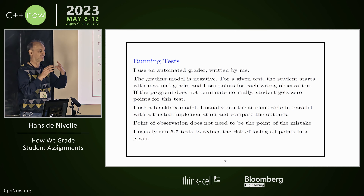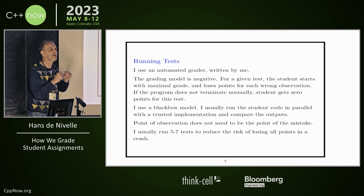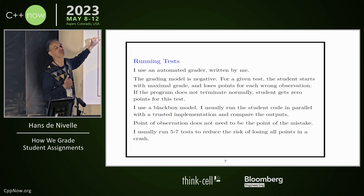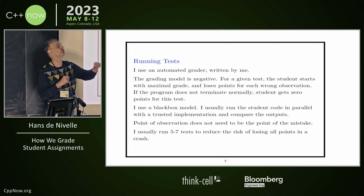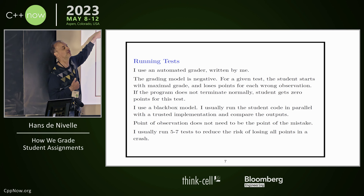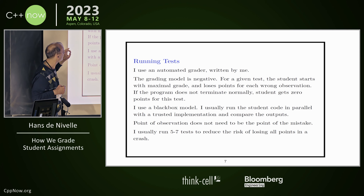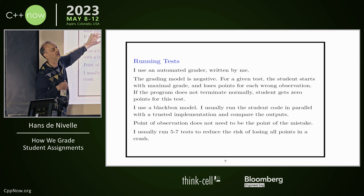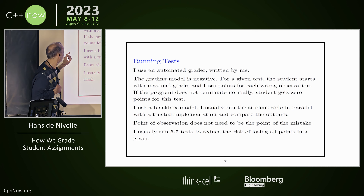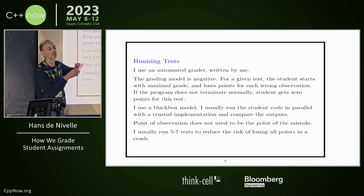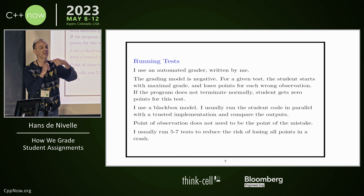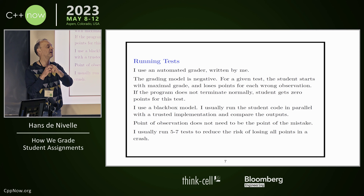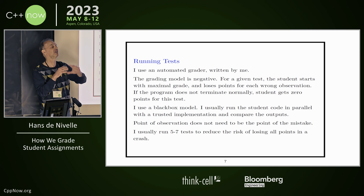The automated grader is written by me. Students start with a full grade, and on every failure they lose points. This is probably backwards — every success should give you points — but it doesn't work like this. You start with full points and lose them. If the program doesn't terminate normally, the student loses all the points. I use a black box model: you run a couple of tests. For example, if you do a couple of pushes on the stack and then a pop, and the result is wrong, you don't know what was wrong — it could have been the pushes, it could have been the pop. This is a disadvantage of a black box model: you see wrong observations but you don't really see what the student did wrong.